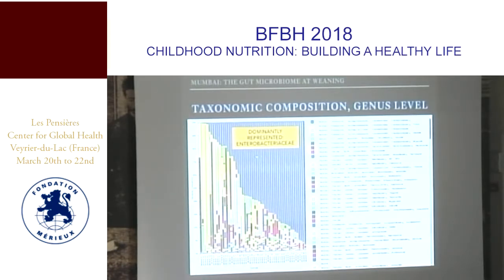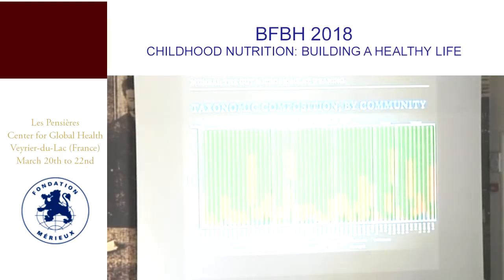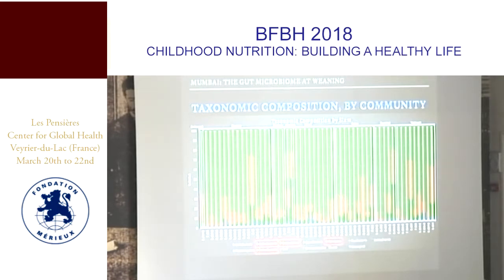At the genus level, the dominant representation is from Enterobacteriaceae — a family of gram-negative bacilli, facultative anaerobes that are generally commensal but can cause opportunistic infections if in the wrong place at the wrong time. We saw some interesting patterns when we split by slum community — each slum in Mumbai is often determined by what part of India the residents have migrated from, so it's a microcosm of that community with different diets and practices. It will be interesting to look at how infant feeding practices vary across these communities.